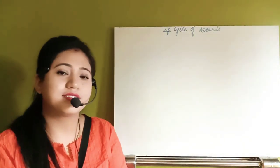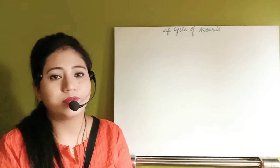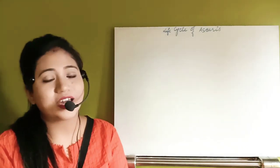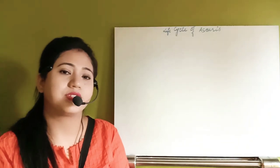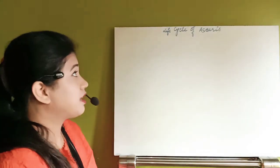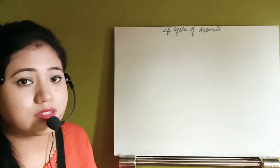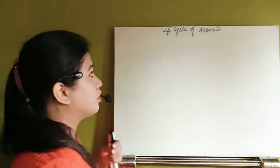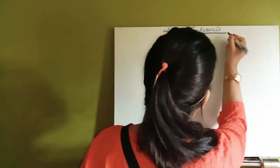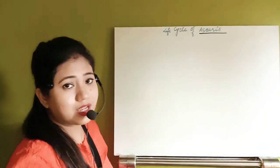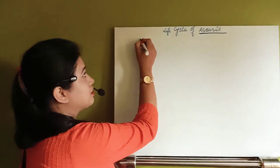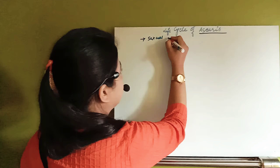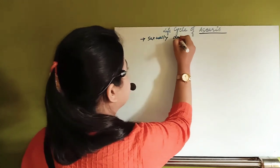Last session we discussed phylum Nematoda. Today we start with a parasite named Ascaris — scientific name Ascaris lumbricoides. This organism is a sexually dimorphic animal.